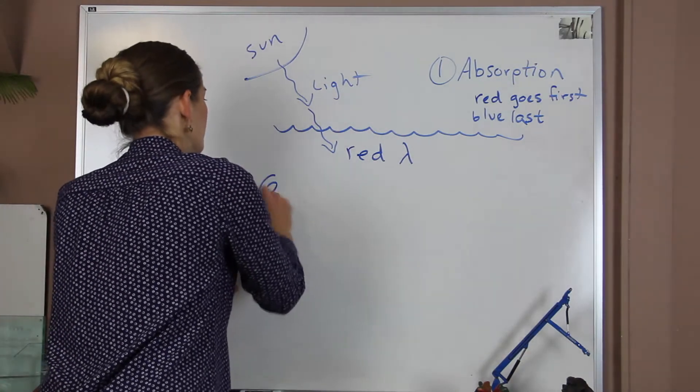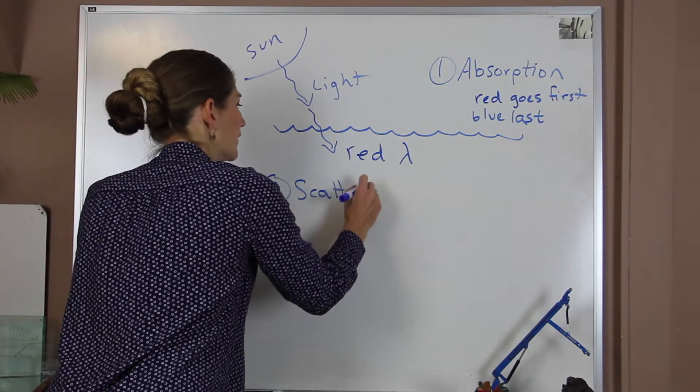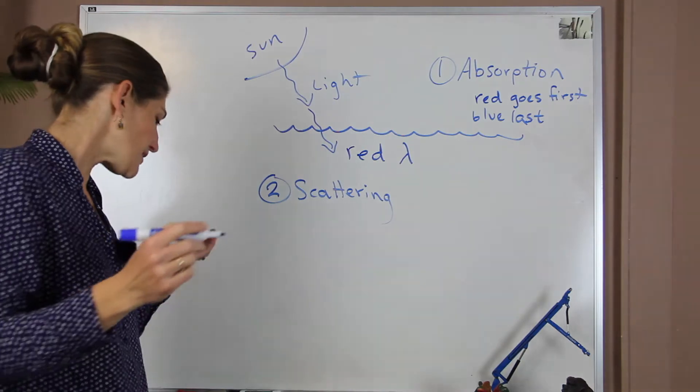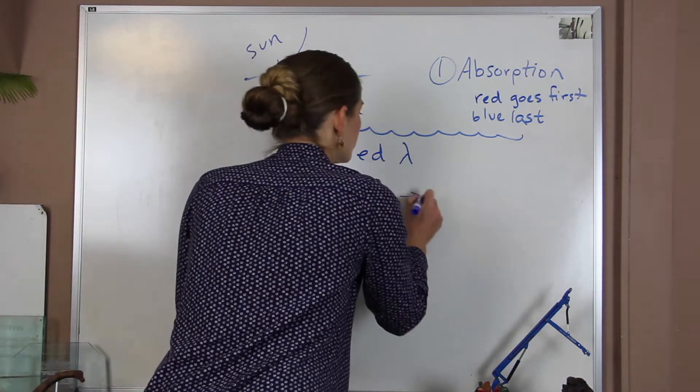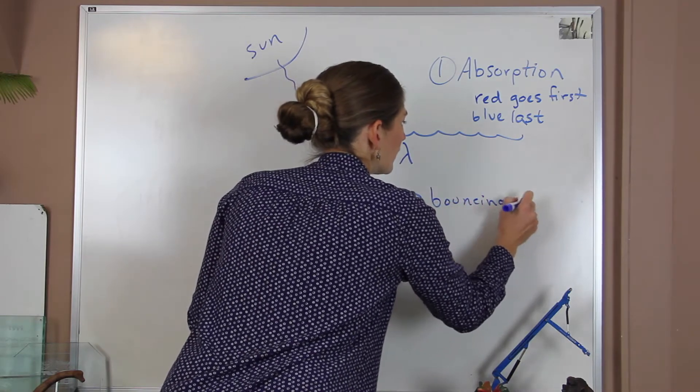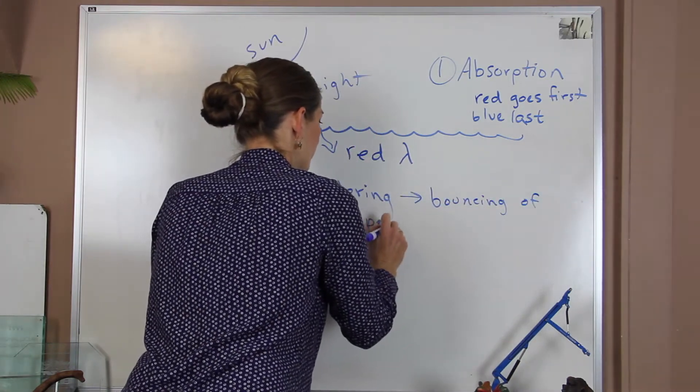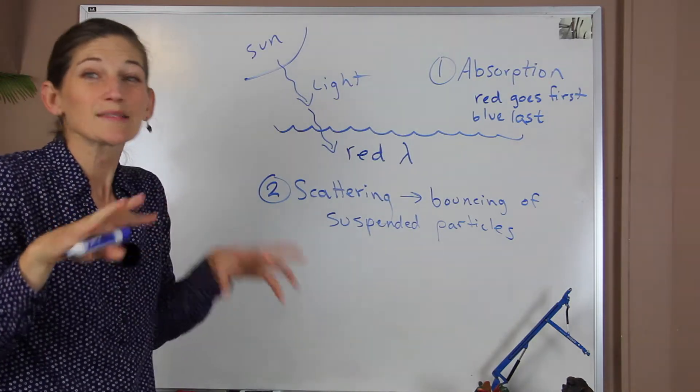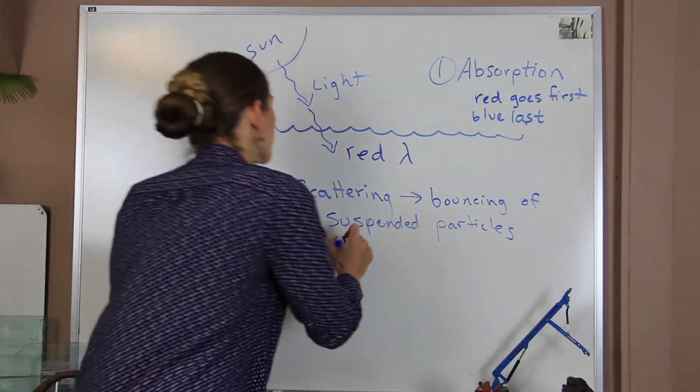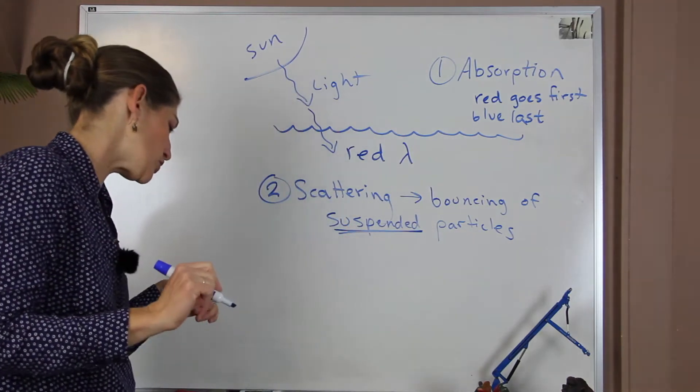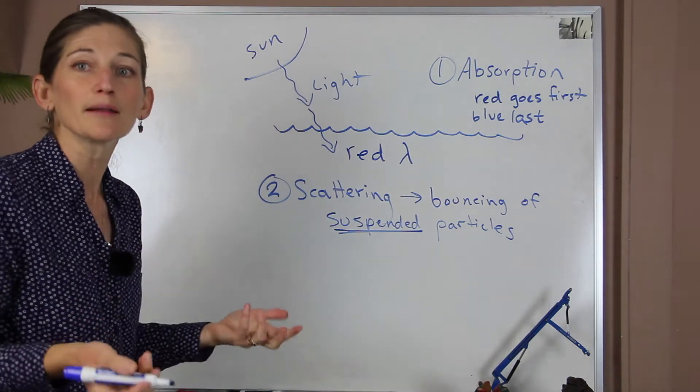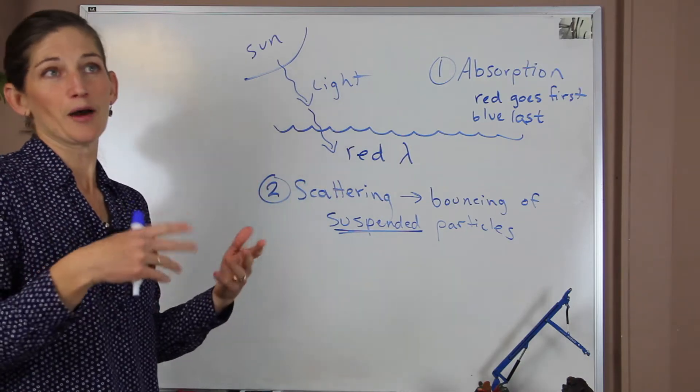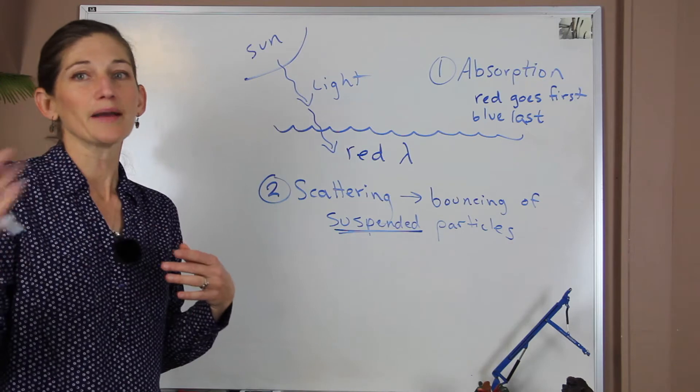The second thing that happens in the water is scattering. Scattering is just the bouncing of all of the wavelengths, the light, off of different things in the water. It tends to bounce off of the suspended particles. And those particles are things that are really small, and they're actually held in suspension in the water. This can include inorganic particles, so sediments, and it can also include organic particles. So, products of organic things, so it can be byproducts of animals.